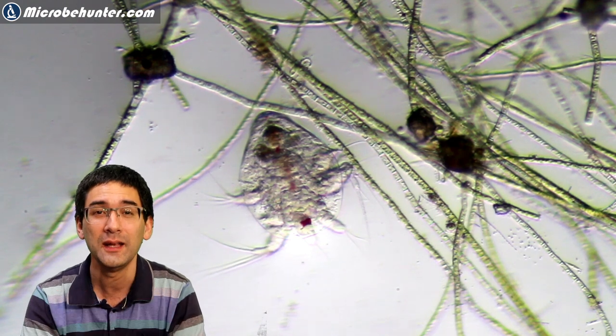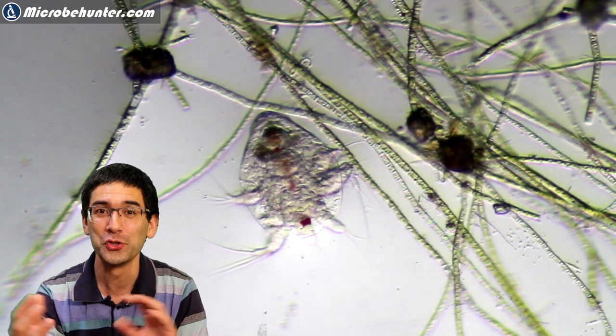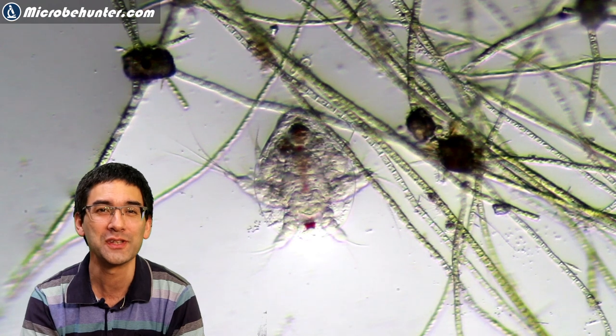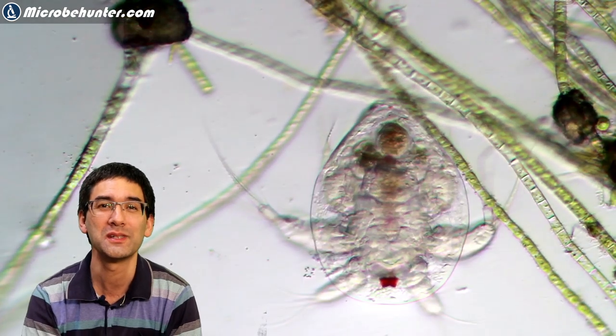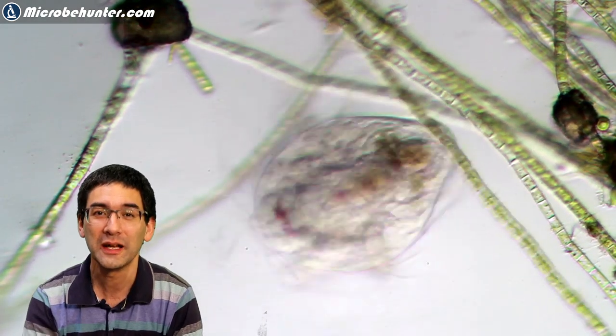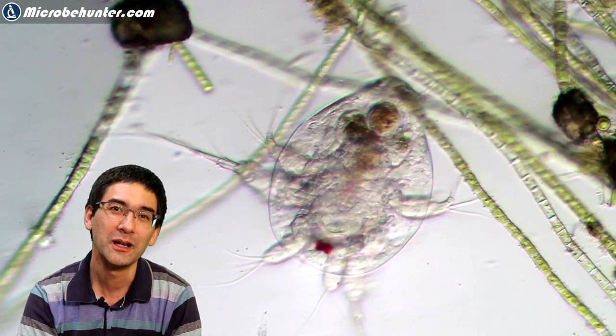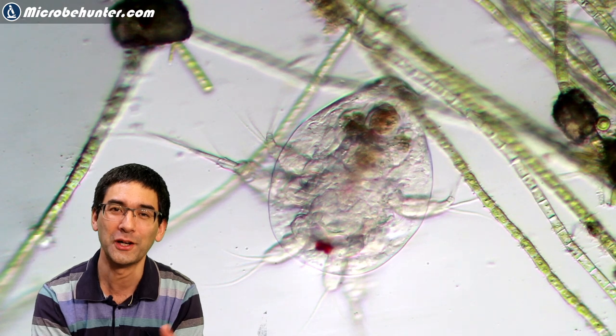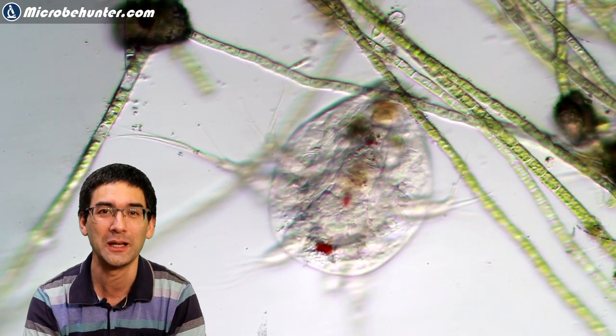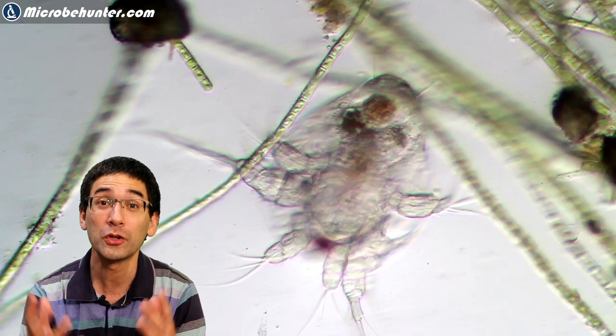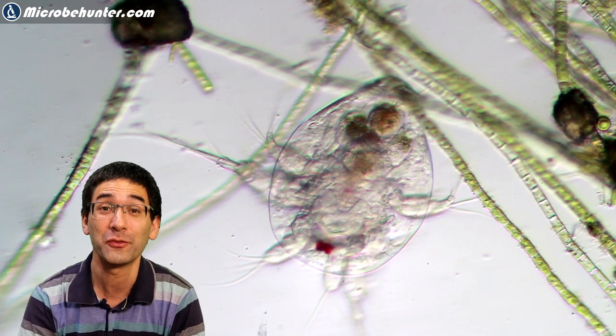The organs are also moving around—that's one of the nice things about these organisms. They're called water fleas because they move around in such a fast and jerking manner. They're related to crabs, crustaceans, and shrimp, as a matter of fact.